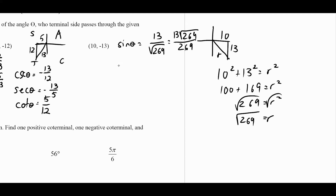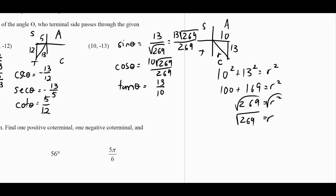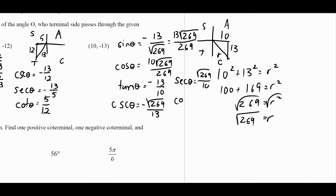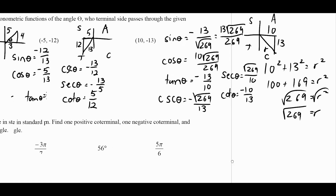Cosine of theta is 10 root 269 over 269, and tangent of theta is 13 over 10. Now we need to determine signs — it's positive only for cosine, so sine and tangent are negative. Cosecant of theta is negative root 269 over 13 (no rationalization needed since the radical is already on top). Secant of theta is positive root 269 over 10, and cotangent is negative 10 over 13. Number one is finished.